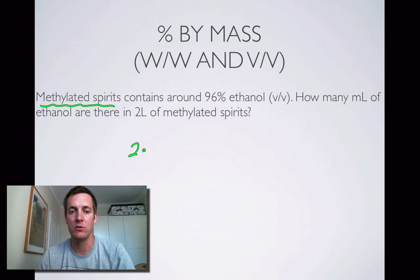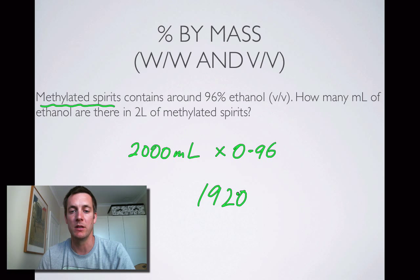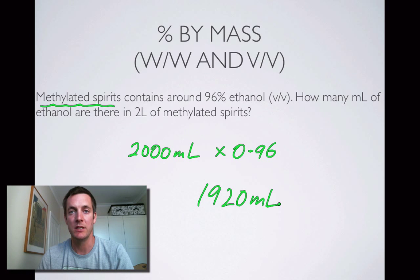Two liters is 2000 milliliters. It is absolutely vital that you know the conversion between milliliters and liters — there are 1000 milliliters in every liter. 96 percent is 0.96, so if you multiply 2000 by 0.96 you get 1920 milliliters. That's what we mean by percentage concentrations — very simple. If you can do percentages you can do those.